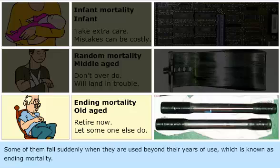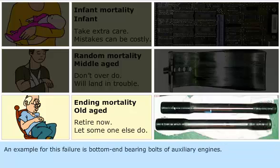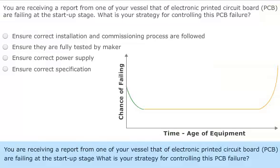Some machinery fails suddenly when used beyond their years of use, which is known as ending mortality. An example for this failure is bottom-end bearing bolts of auxiliary engines.